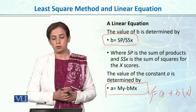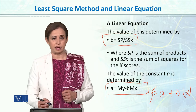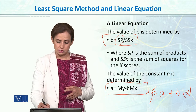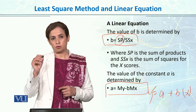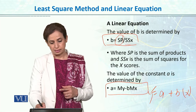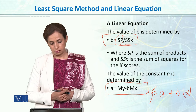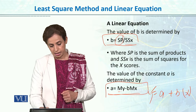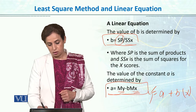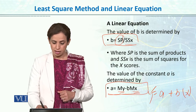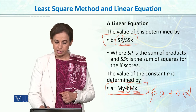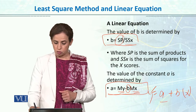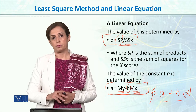To calculate the B coefficient, the formula is SP divided by SSX. We have to take the sum of products of both variables — the deviation of x and y — and then SSX, the sum of squared deviations of the x variable. To calculate the A coefficient, we take the mean of y minus B multiplied by the mean of x. So first we calculate B, then we find the means, then we calculate A, and then we plug in A and B to get the regression line and the predicted scores.